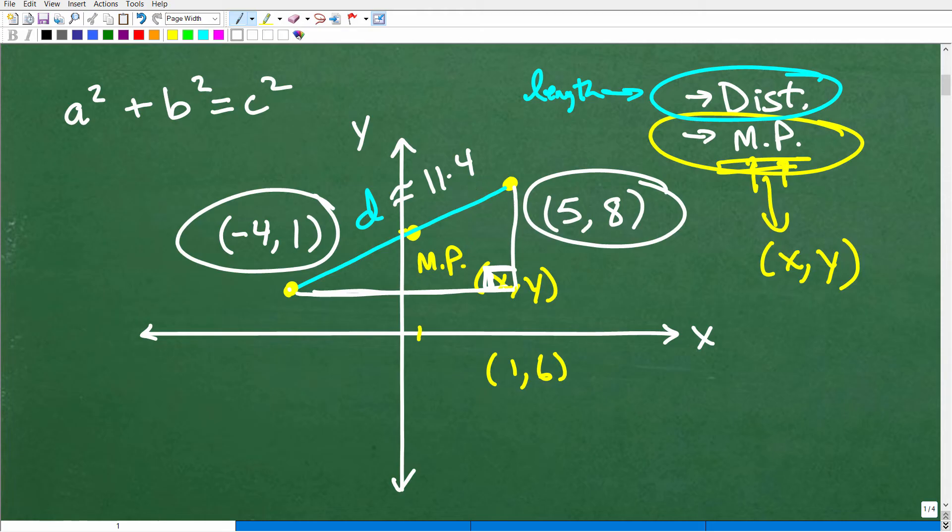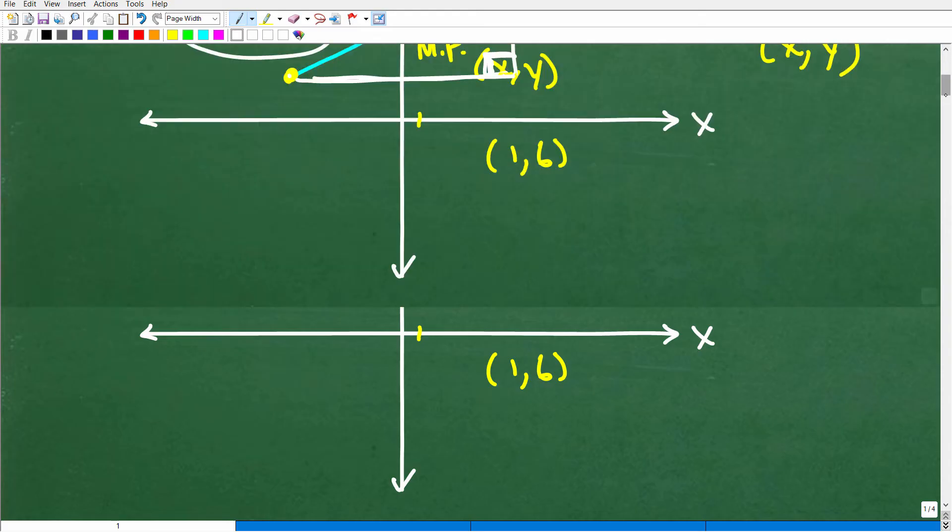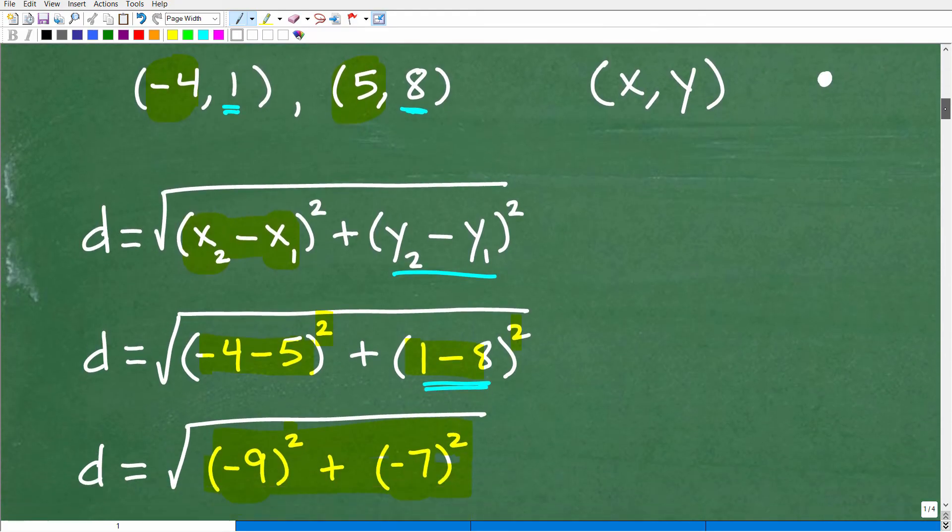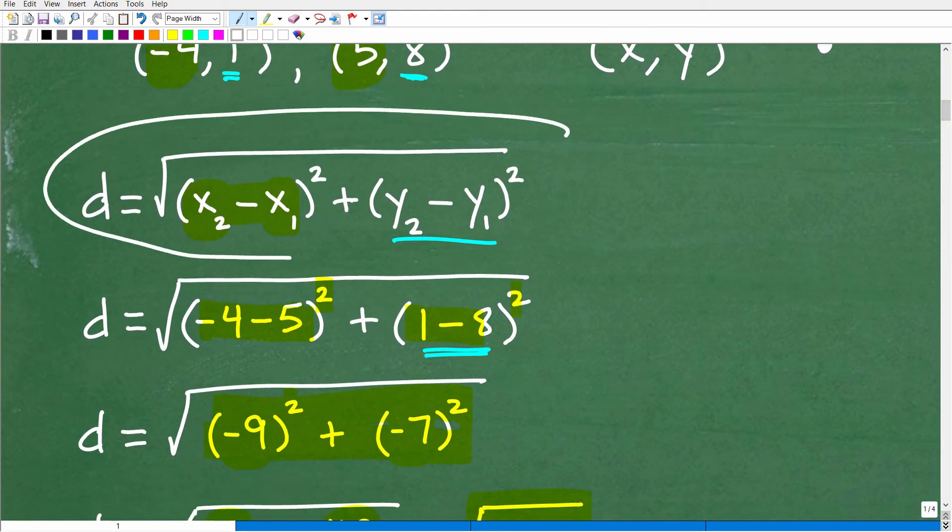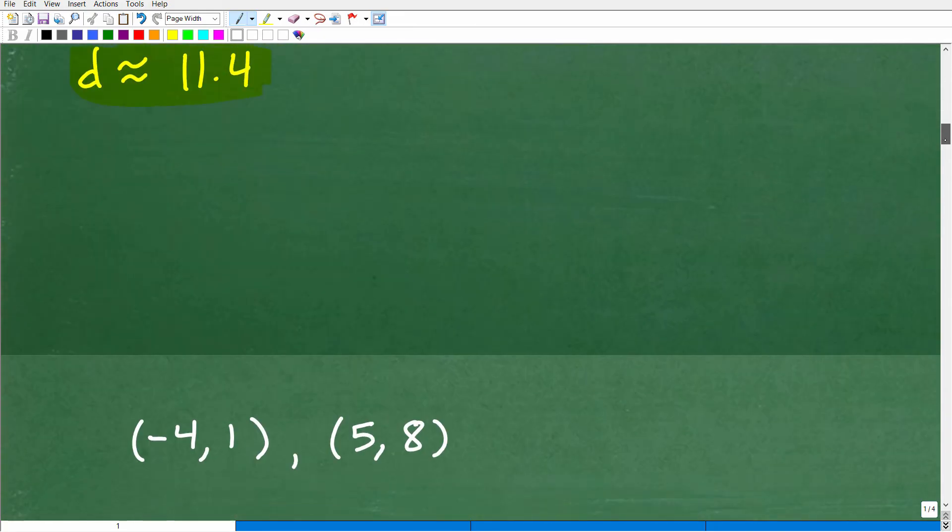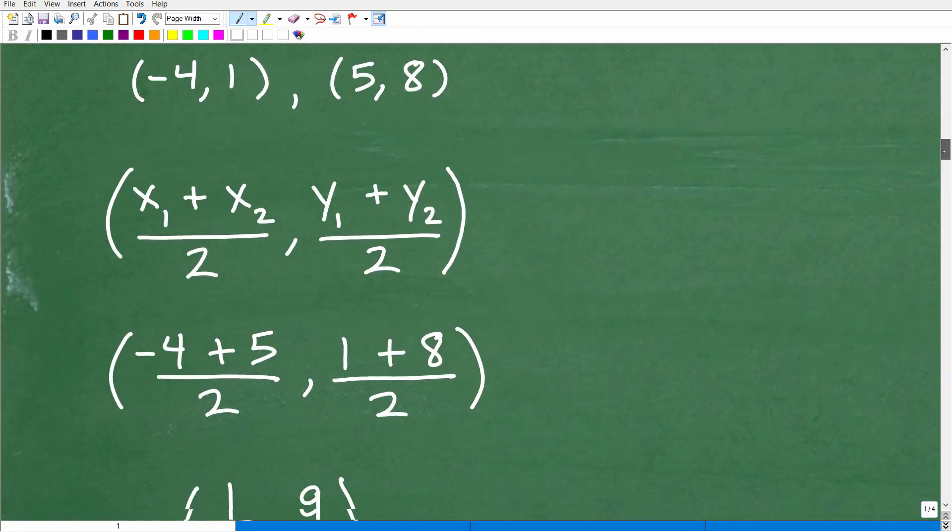This is how the distance formula is kind of created or derived. But that's for another video. So if you're like, hey, my teacher told me something about the Pythagorean Theorem, well, they'll just kind of show you how the formula was derived. So in some strange way, maybe not strange way, this is kind of a fancy way of using the Pythagorean Theorem. a squared plus b squared is equal to c squared, if you were just curious about that. So that's the distance formula. Let's go ahead and take a look at the midpoint formula.